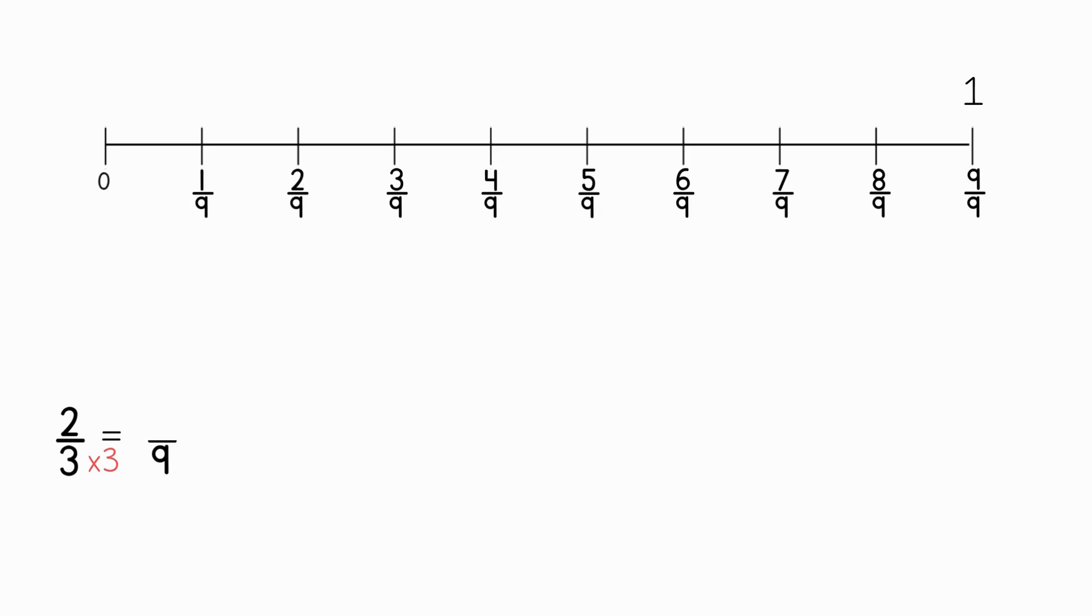Three times three equals nine. And remember, you multiply the numerator by the same number you multiplied the denominator. What's two times three? Two times three equals six. So, we've found our equivalent fraction. Two thirds is equal to six ninths. And now we can plot two thirds in the same spot as six ninths since they're equal.